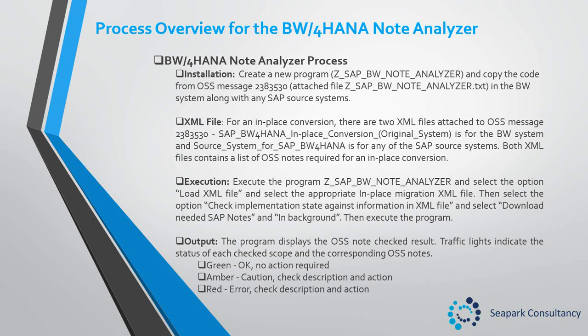The program displays the OSS note checked result. Traffic lights indicate the status of each checked scope and the corresponding OSS notes. Green means OK — no action required. Amber means caution — check description and action. Red means error — check description and action.